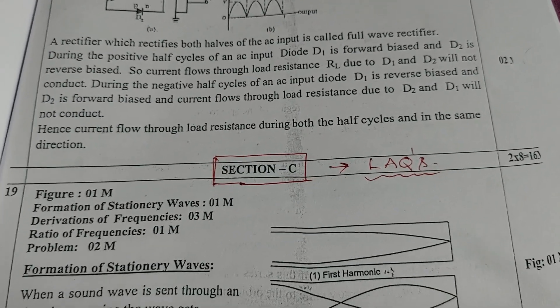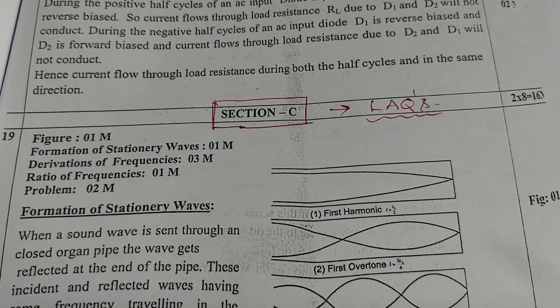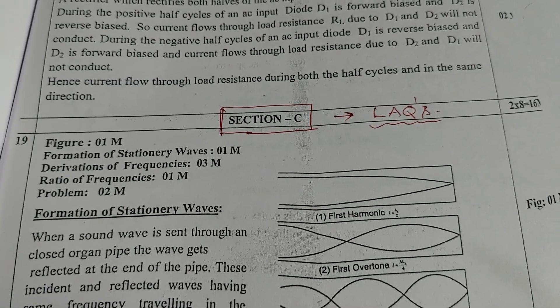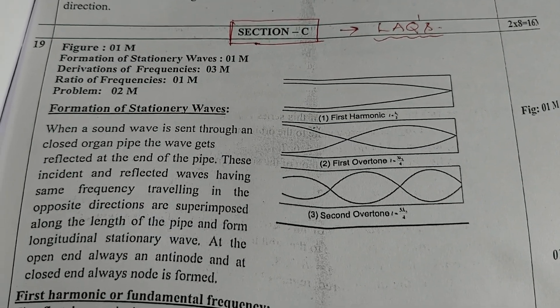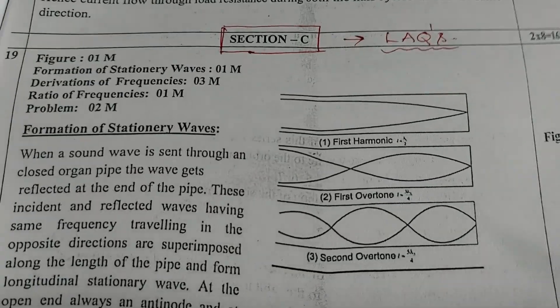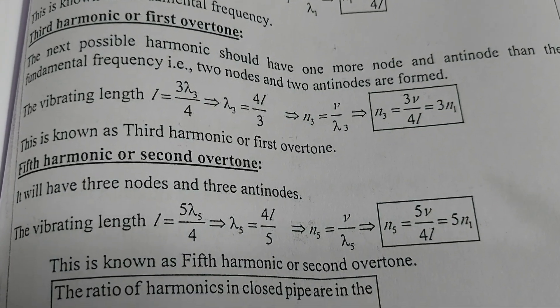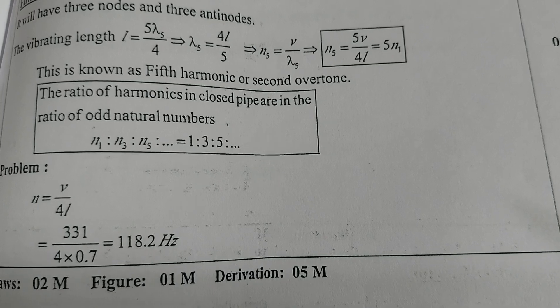This is the most important part — the LAQ part. Three questions will be given; you need to answer only two. Each carries eight marks — two eights are 16. Question 19: figure/diagram one mark, formation of stationary waves one mark, derivation of frequencies three marks, ratio of frequencies one mark, problem sum two marks. The answer for the problem: N equals V divided by 4L, giving 118.2 Hz.